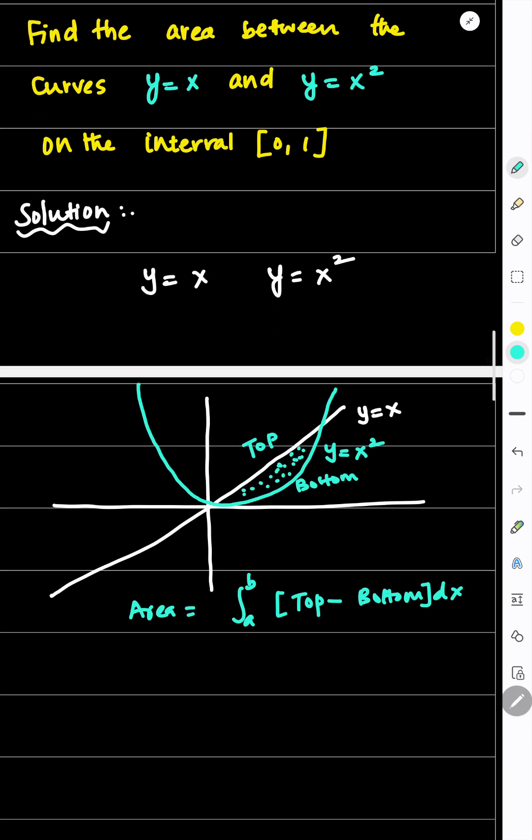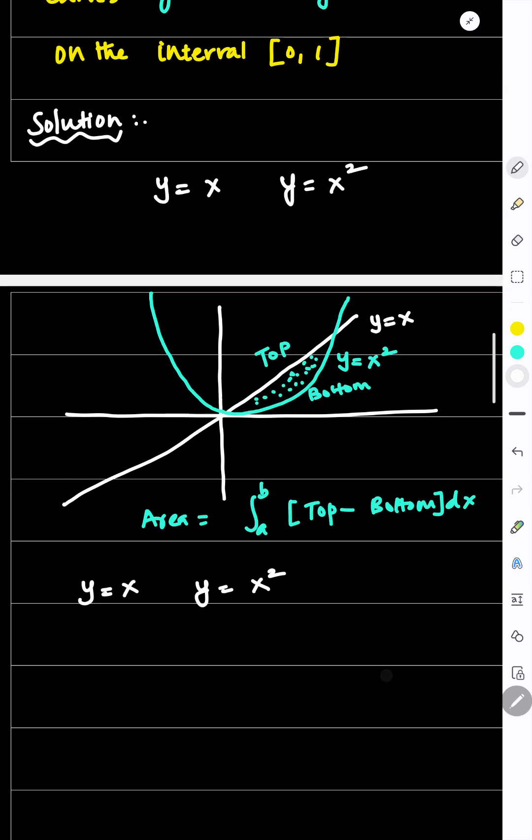Now we need to find the common points of intersection. So y equals x and y equals x square. These are the two curves. If the left sides are equal, then we can say right hand sides are equal. So x equals x square, which implies 0 equals x square minus x.